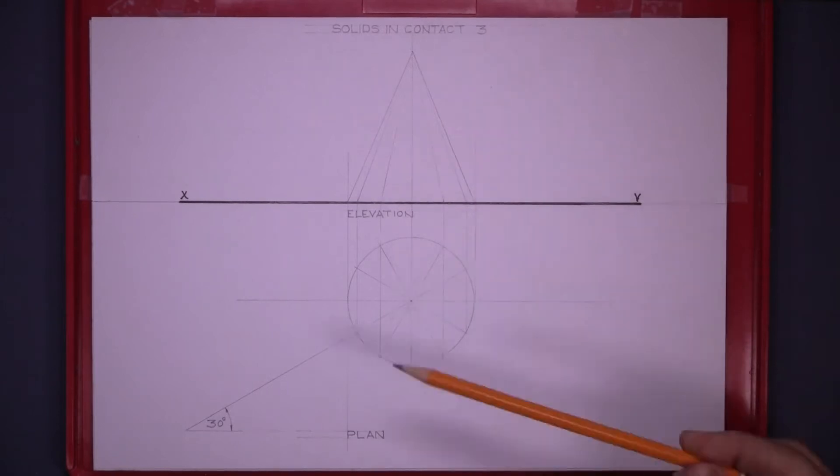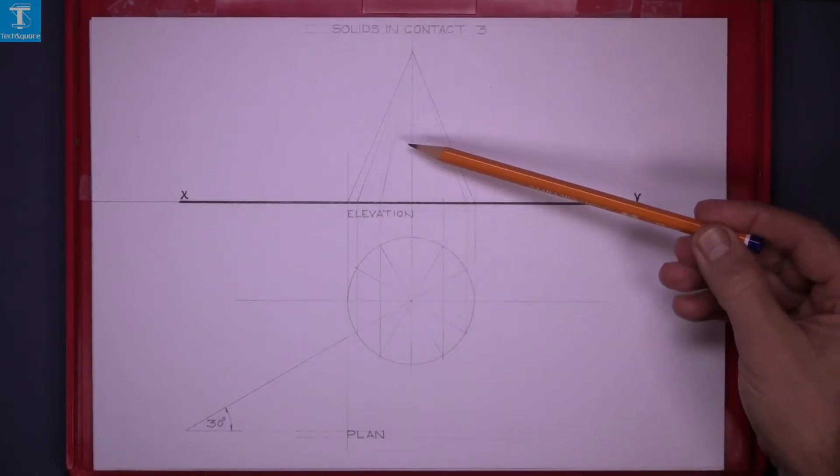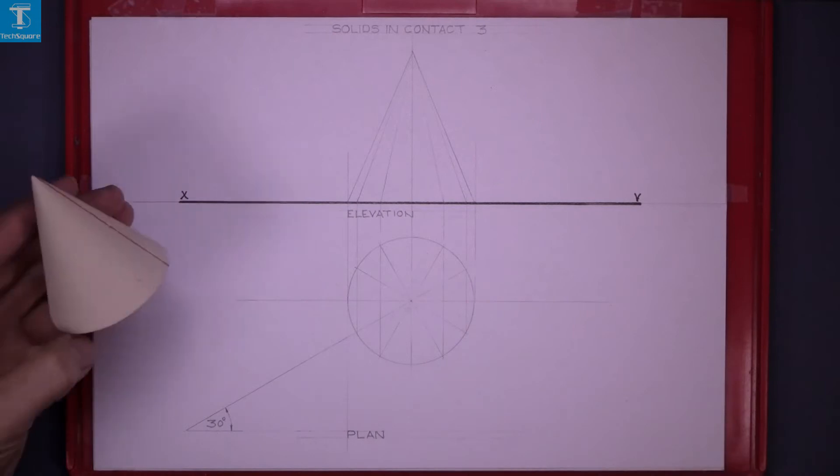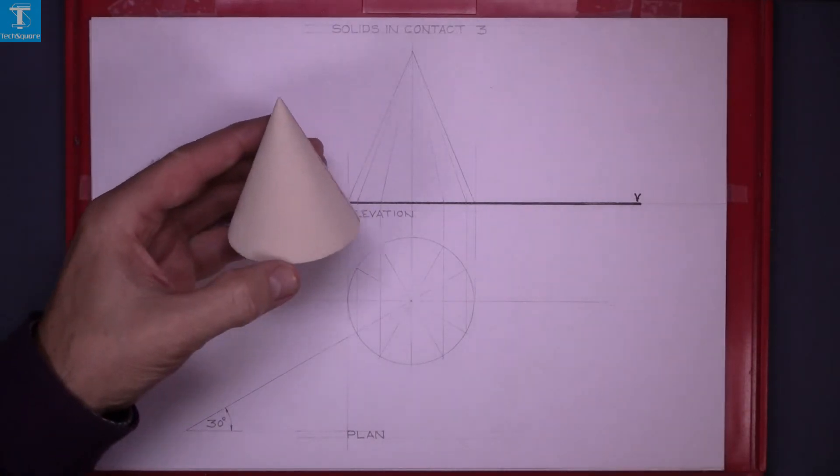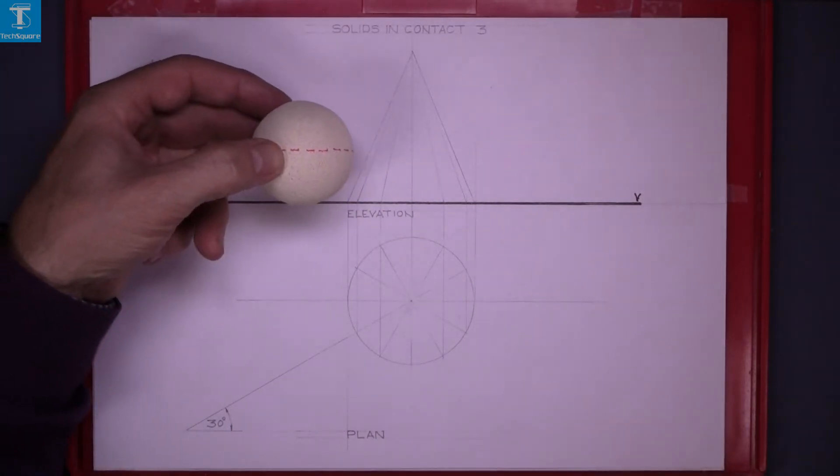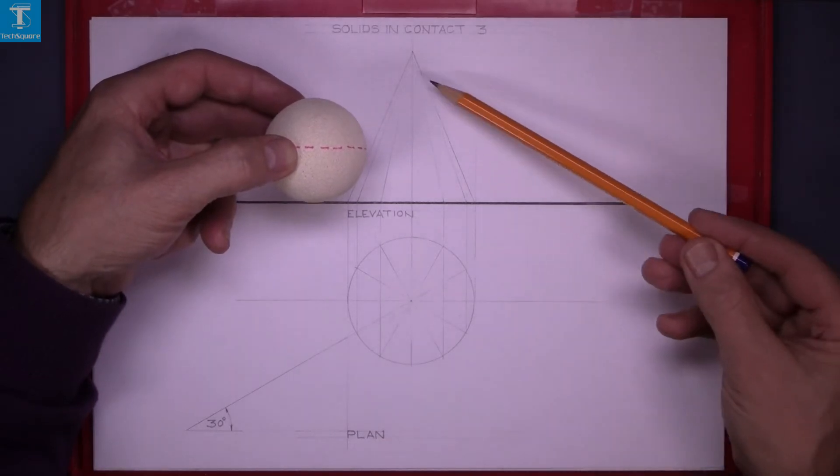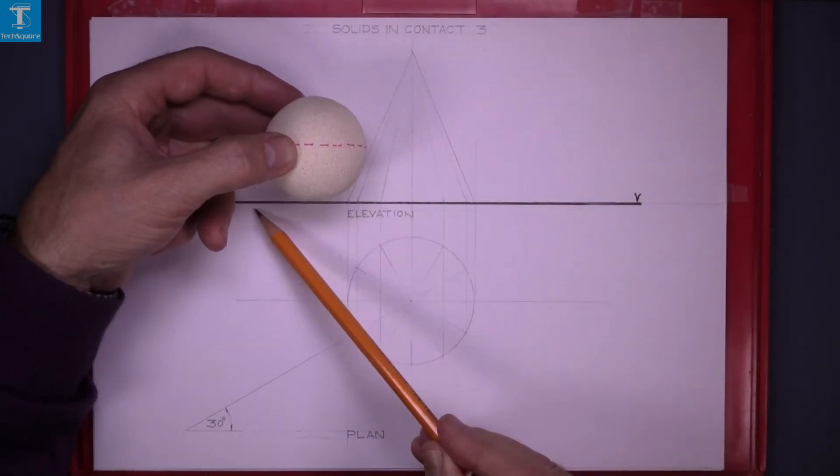Solids in contact 3. Given the elevation and plan of a cone, we are asked to draw a sphere in this position, in contact with the cone and in contact with the ground.